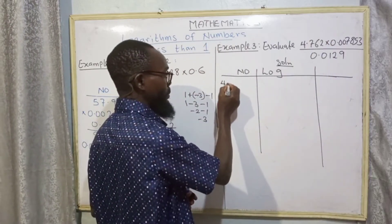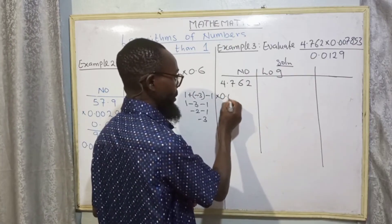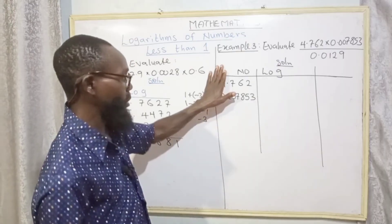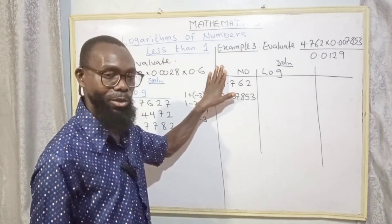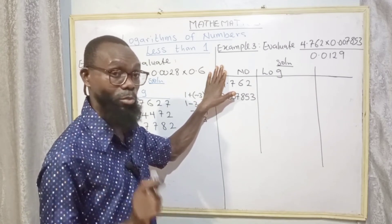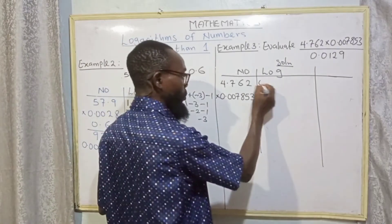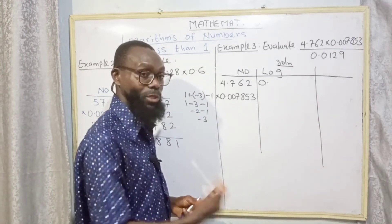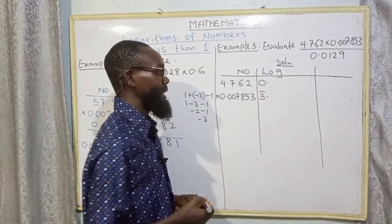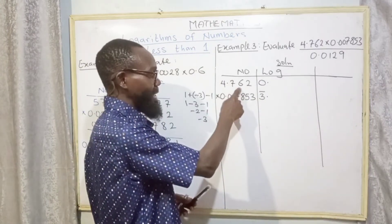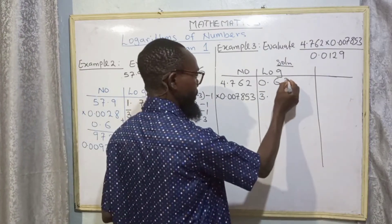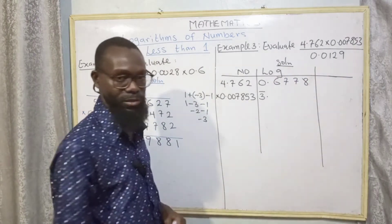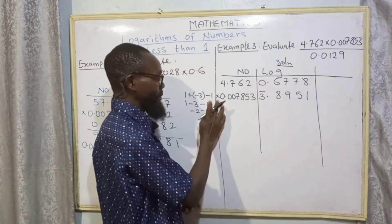Example three: evaluate 4.762 multiplied by 0.007853 divided by 0.0129. For 4.762: no zero, cover the first digit — no more digits after without jumping decimal — so we have 0 points. For 0.007853: three zeros, so bar three. We check the logarithm table: 47 under 6 difference 2 gives 6778. For 78 under 5 difference 3 we have 8951.